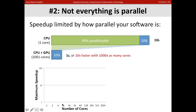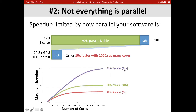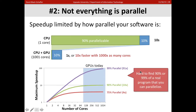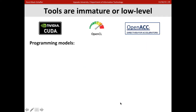This is Amdahl's law. As a function of the number of cores, if my program is 75% parallel, the best I can do is about four times faster even with a thousand cores. If it's 99% parallel with a thousand cores, the best I could possibly do is 91 times faster. GPUs today have hundreds to thousands of cores, but the problem is it's hard to find 90% of your program that's parallelizable, let alone 99%.